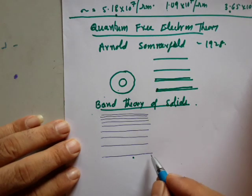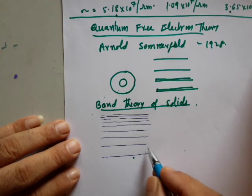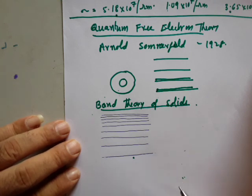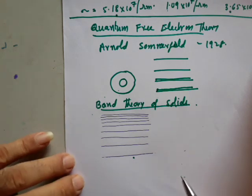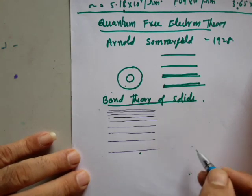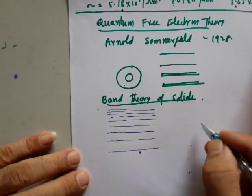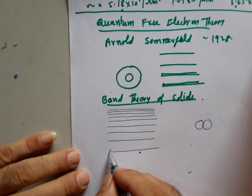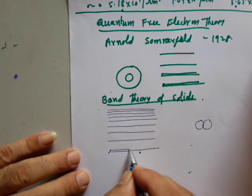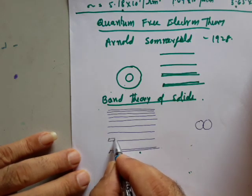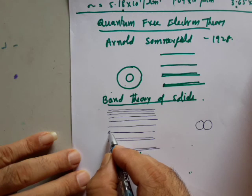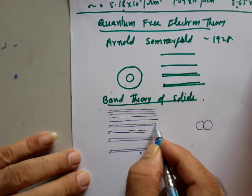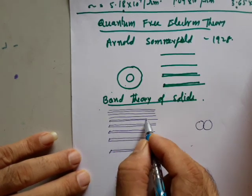Classically, if you bring one more atom, the next energy level remains as the next. But band theory says that when you bring one more atom closer, the energy levels of each atom split — every one energy level splits into two energy levels. Splitting of energy levels takes place at each energy level.